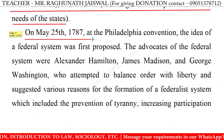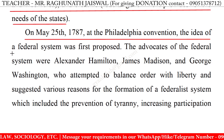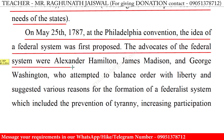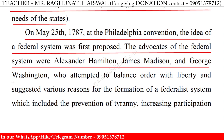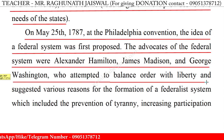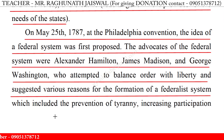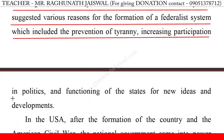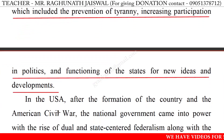On May 25th, 1787, at the Philadelphia Convention, the idea of a federal system was first proposed. The advocates of the federal system were Alexander Hamilton, James Madison and George Washington, who attempted to balance order with liberty and suggested various reasons for the formation of a federalist system, which include the prevention of tyranny, increasing participation in politics, and functioning of the states for new ideas and developments.